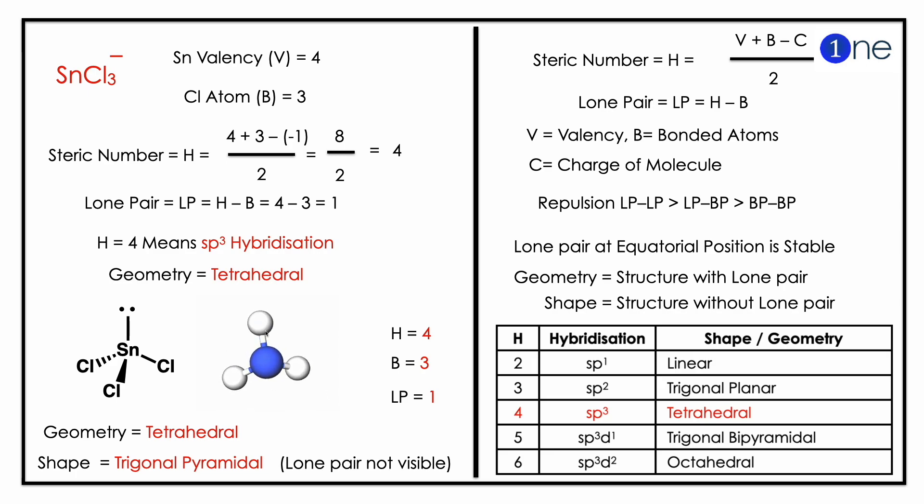The steric number is H = (B + V - E)/2. You have tin, which has valence 4, and chlorine atoms are 3 with one negative charge. If you substitute in the steric number, you have 8/2 which gives 4. This means sp3 hybridization with tetrahedral geometry.